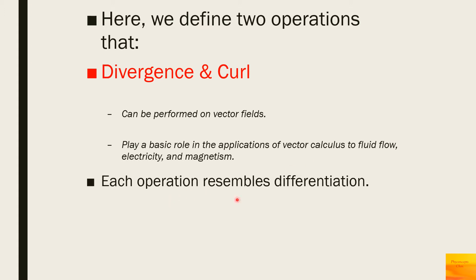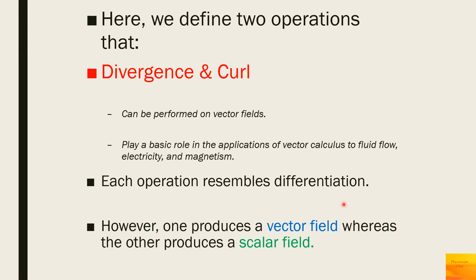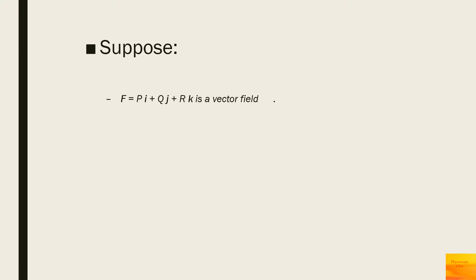Each operation resembles differentiation. One operation will produce a vector field whereas the other produces a scalar field. If we have a vector field represented as F̄ = P·î + Q·ĵ + R·k̂, and the partial derivatives of P, Q, and R all exist.